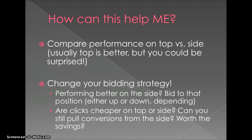How can this help me? This is a better way to compare performance on top versus side rather than just assuming your average is where you're appearing most often. The way I find it most successful is it can help you realign your bidding strategy. For example, if an ad is showing at position 2.7 and I want to perform best at position 1, previously I would have tried to bid that up. But when I split it out, I can see that I am showing in position 1 and having success there, while only occasionally showing on the side without getting conversions.